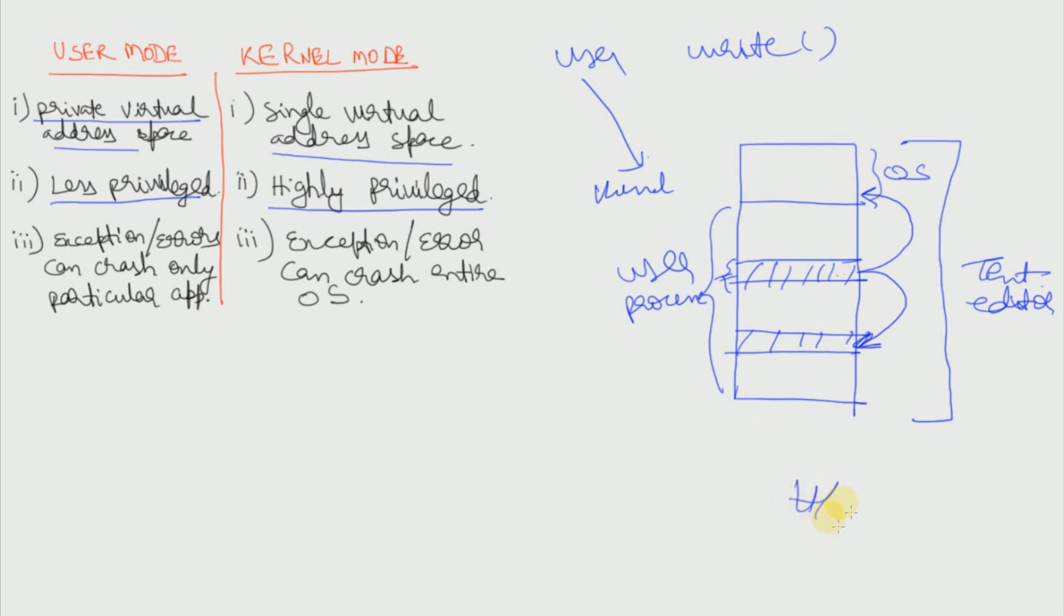Suppose we have a hardware and a user mode, then a kernel mode. Now the user mode process cannot directly interact with the hardware. It has to create a system call that will change mode from user mode to kernel mode. And then since kernel has access to each and every address space and it also acts as an interface between hardware and the kernel mode itself, then it can interact with the hardware.